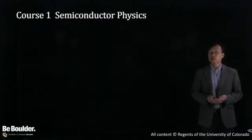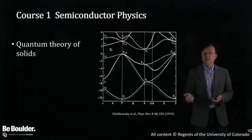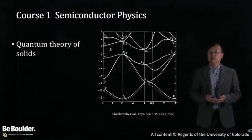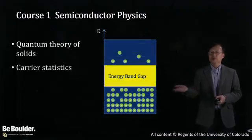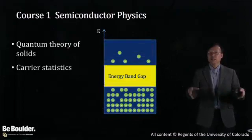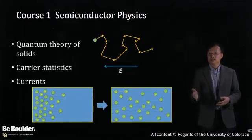In the first course on semiconductor physics, we start with quantum theory of solids. Here we discuss energy band structure, what gives rise to energy band structure, and how they dictate materials properties, especially semiconductor materials properties. Next, we discuss how electrons are distributed in the energy bands of a semiconductor and how they lead to electrical current.